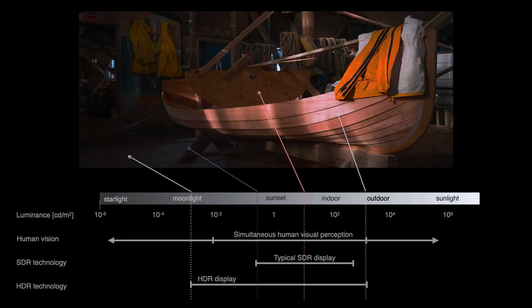The human visual system is exposed to a huge range of light levels from the world we see, from starlight to moonlight to direct sun. Our visual system adapts to this range, and even in an instant can capture a huge range of light intensity.